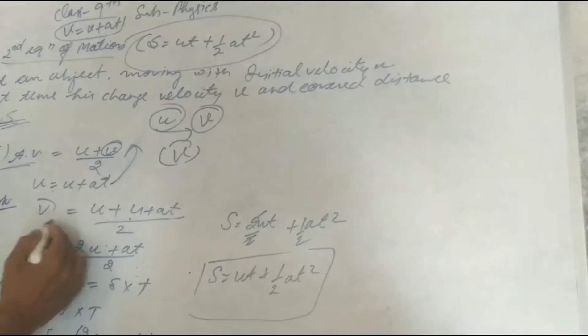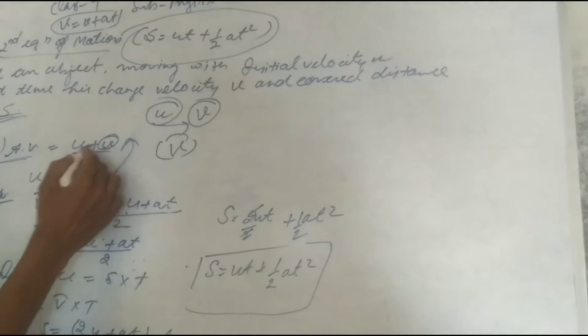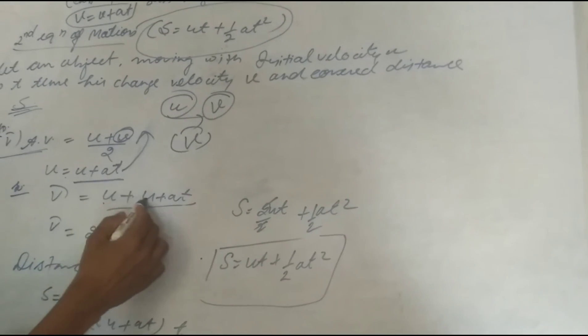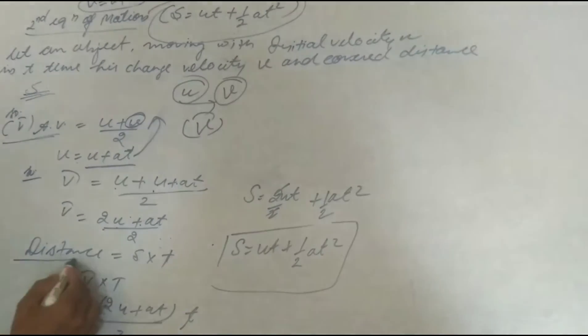So we put in this equation, so we get v bar equal to u plus u plus at. On the place of v, we put u plus at. So u plus at, u u, 2u, 2u plus at.